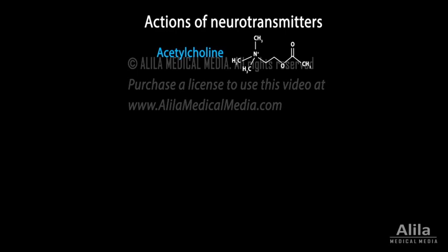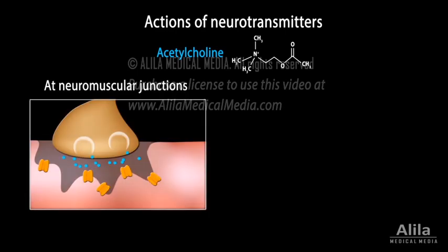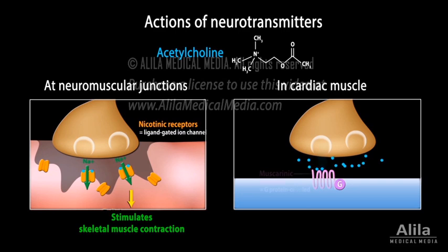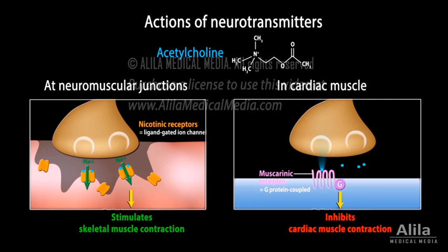Acetylcholine is a neurotransmitter that can be either excitatory or inhibitory, depending on the receptor present on the target cell. At neuromuscular junctions, acetylcholine released by motor neurons binds to nicotinic receptors on skeletal muscle cells and stimulates them to contract. On the other hand, it inhibits cardiac muscle cells via muscarinic receptor M2, causing heart rate to slow down as part of the parasympathetic rest-and-digest response.